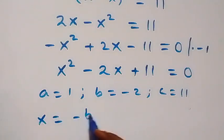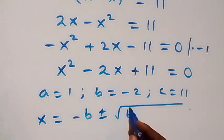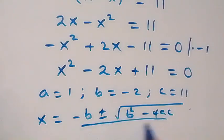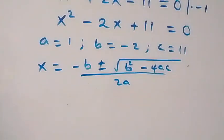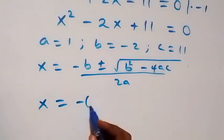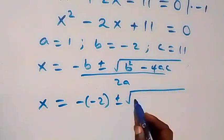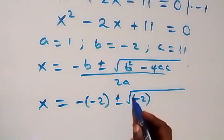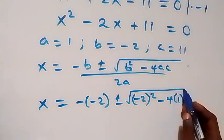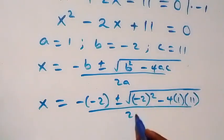From the quadratic formula, we have x equals to minus b plus or minus square root of b squared minus 4ac, all over 2a. Substituting, this becomes x equals to minus of minus 2 plus or minus square root of minus 2 squared minus 4 times 1 times 11, over 2 times 1.